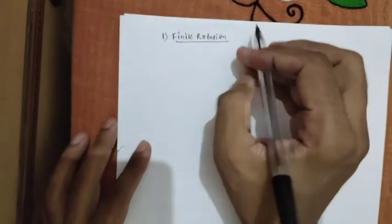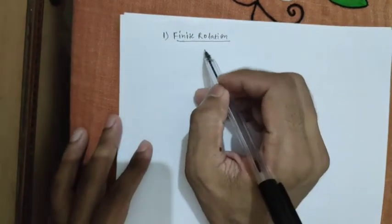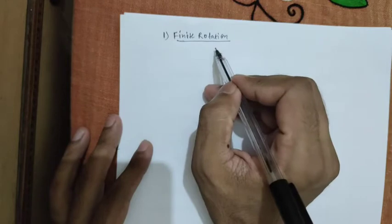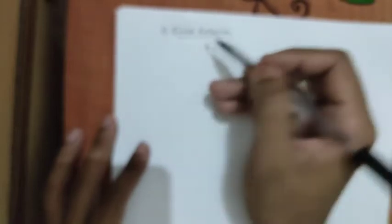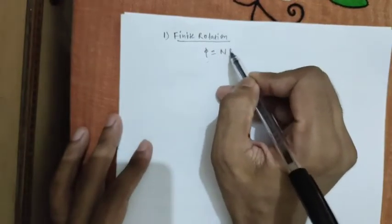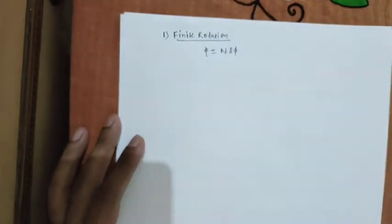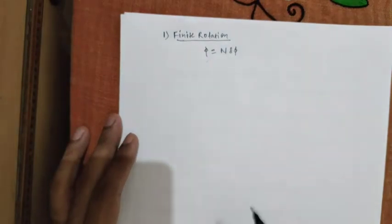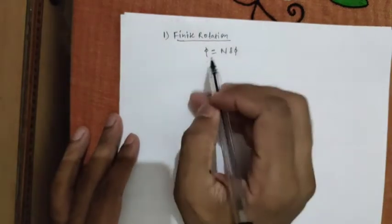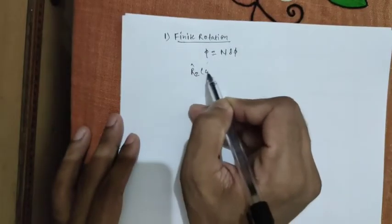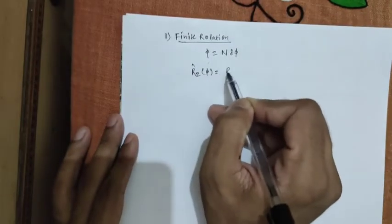So to evaluate for the finite rotation, we assume, say about z axis, the rotation is taking place and rotational angle is phi. And we consider that this rotation phi is composed of n infinitesimal rotation angles. So that's how we can tackle this problem and the rotation operator Rz phi now can be written as like this.